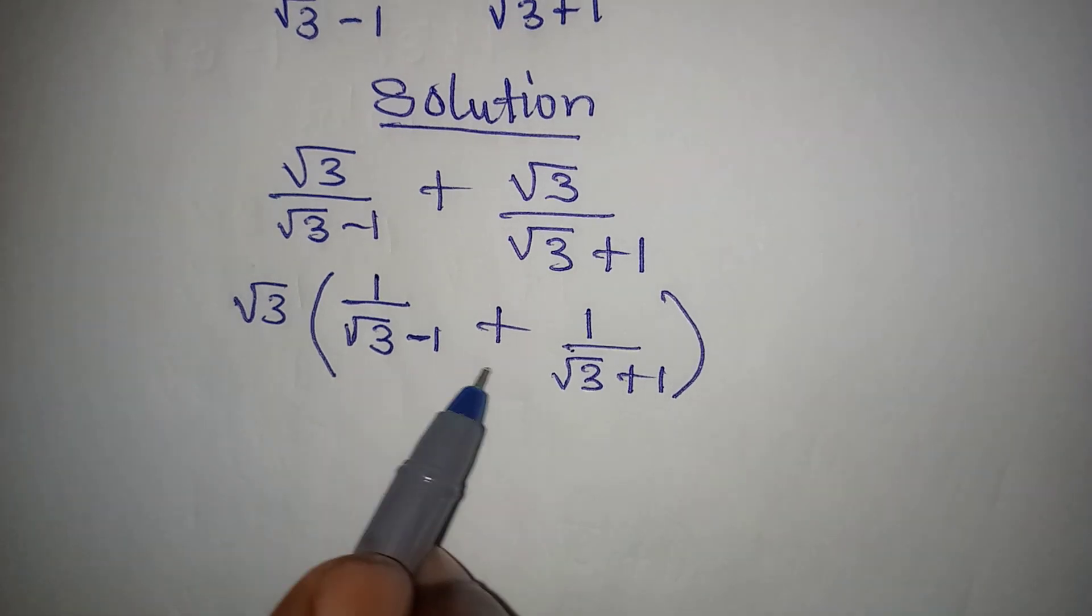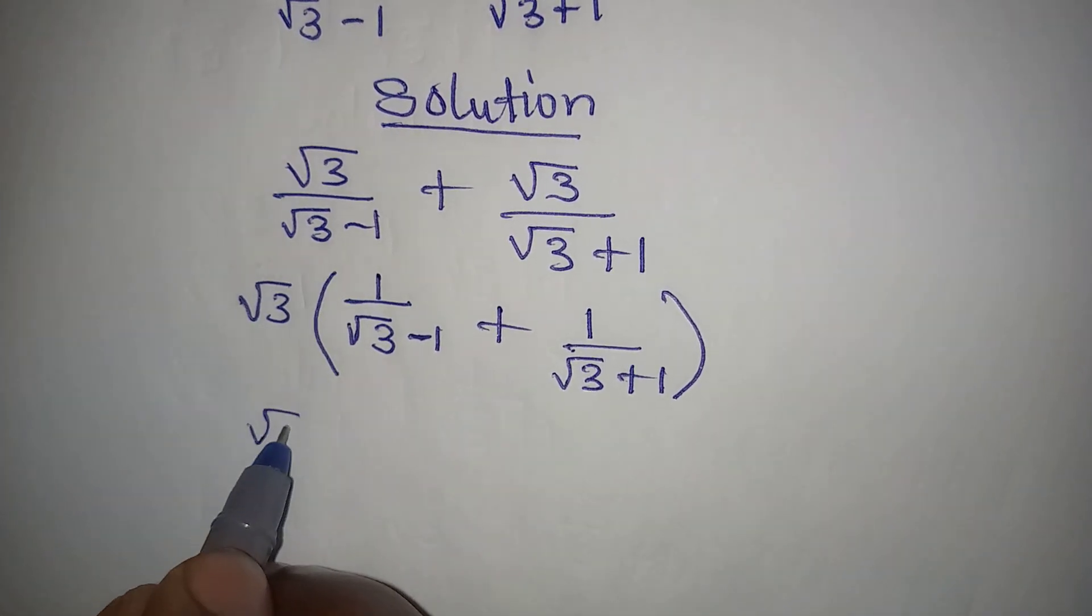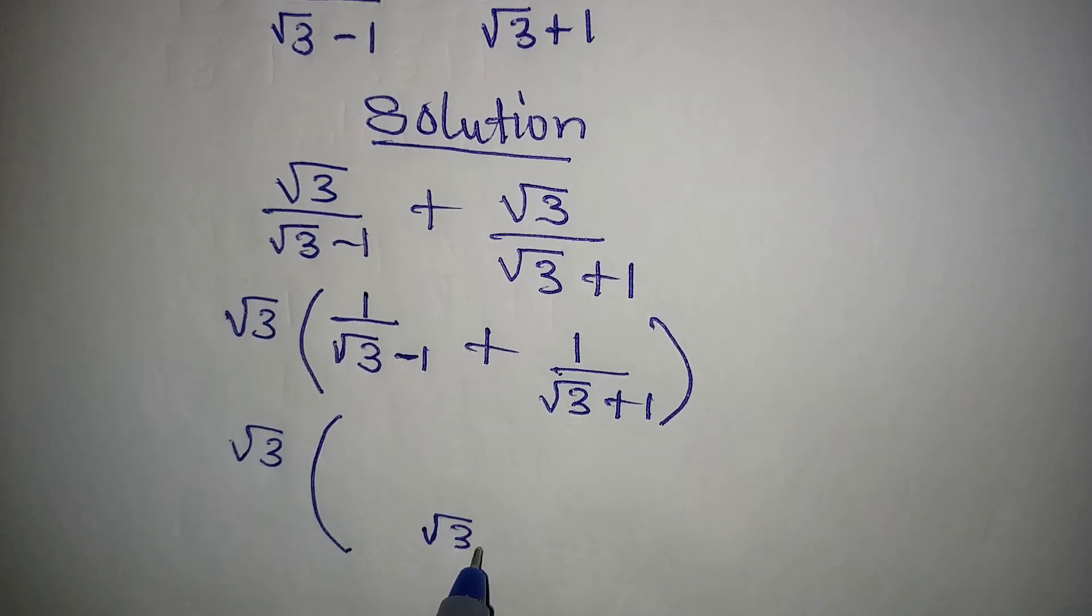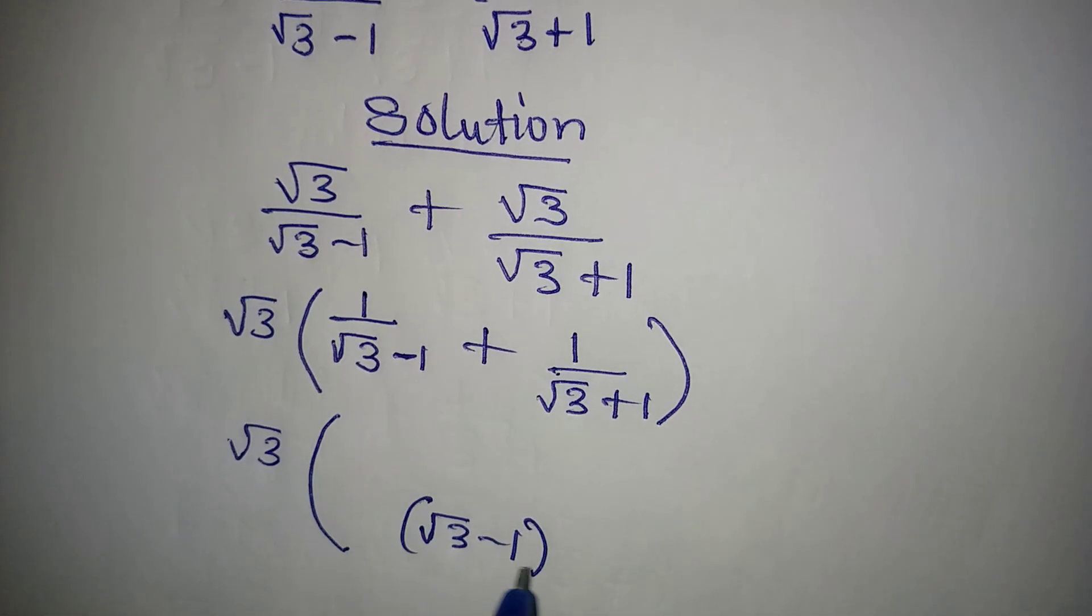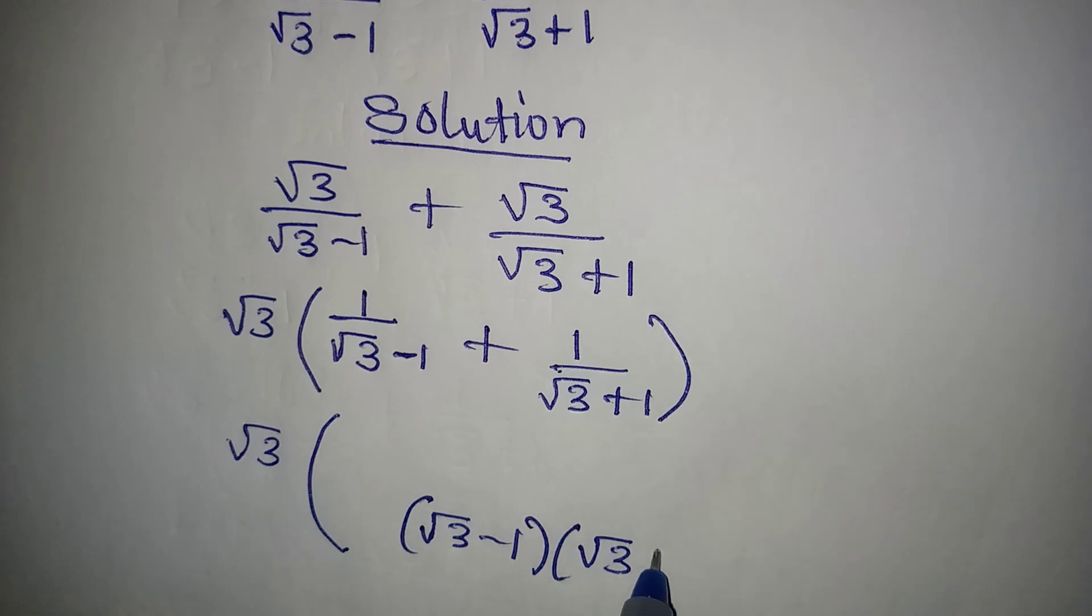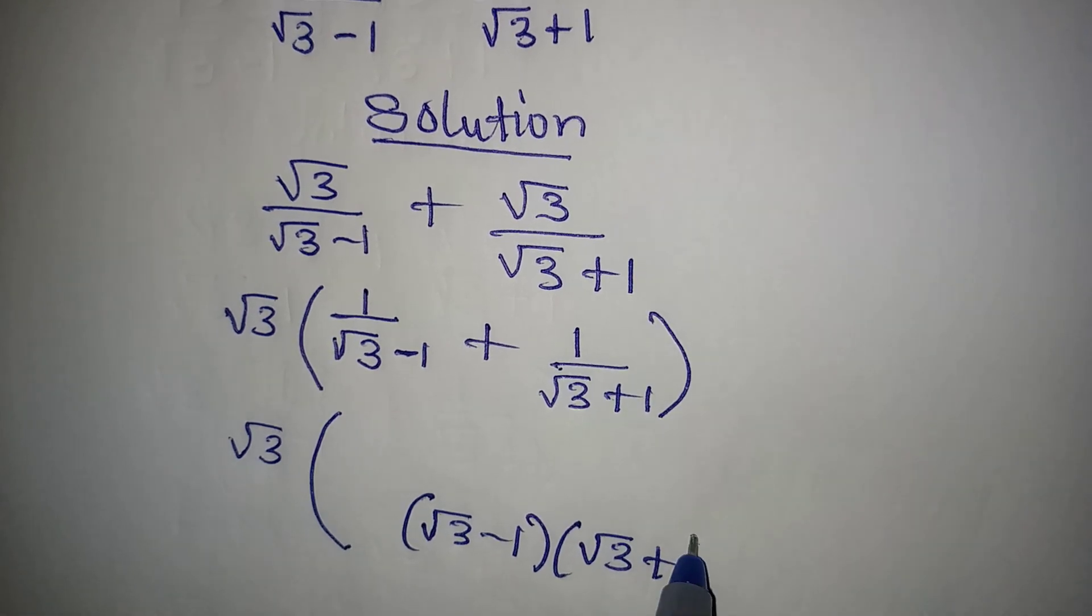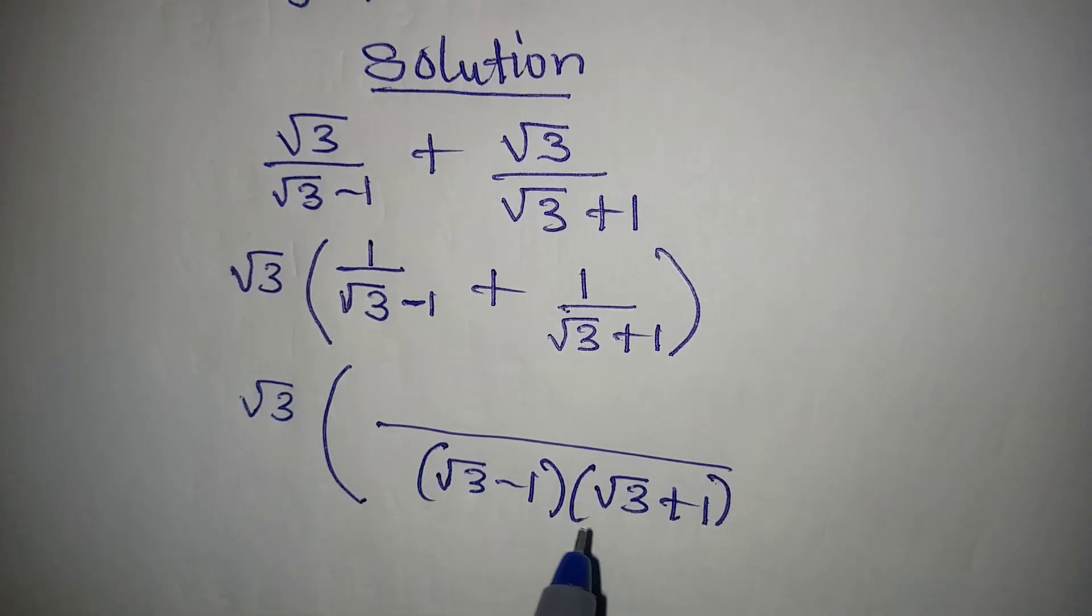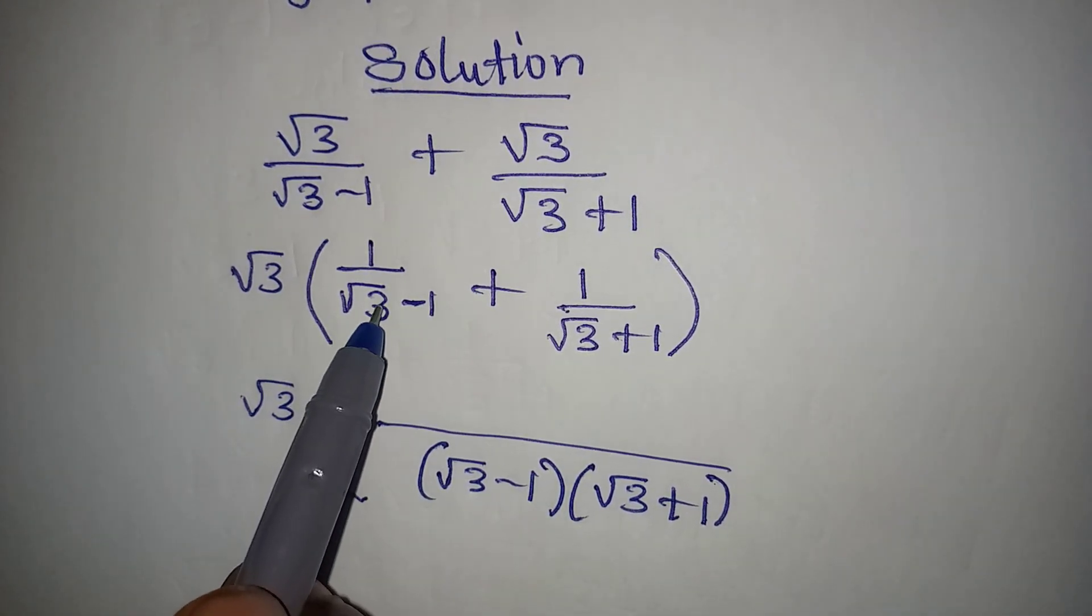Now let us find the LCM of these two terms. Root 3 is outside. The LCM is root 3 minus 1 multiply by root 3 plus 1.